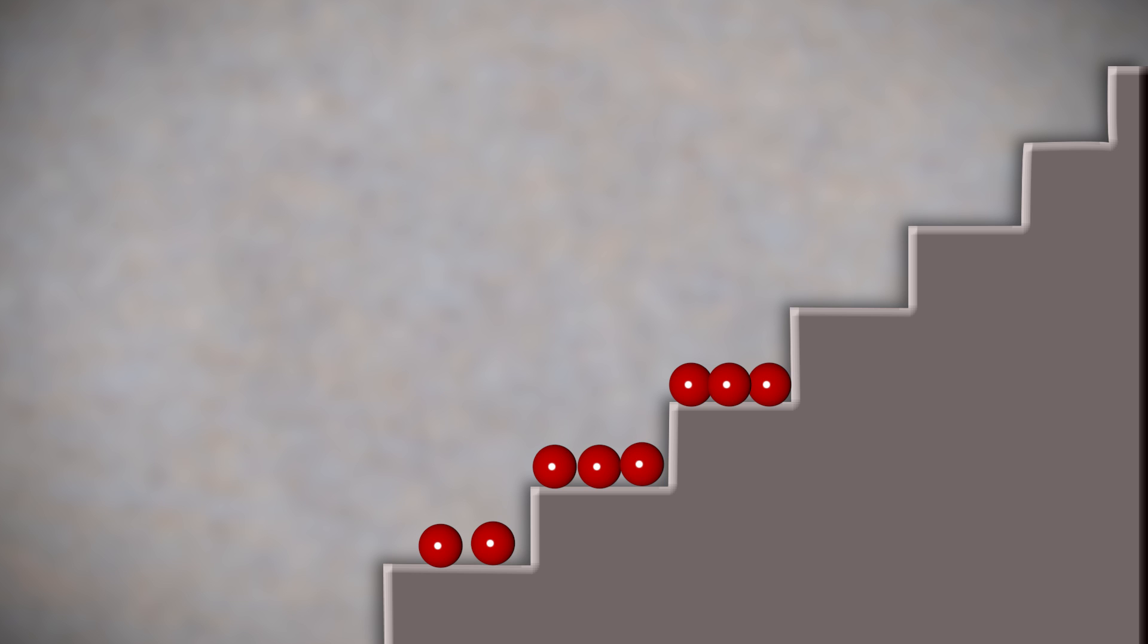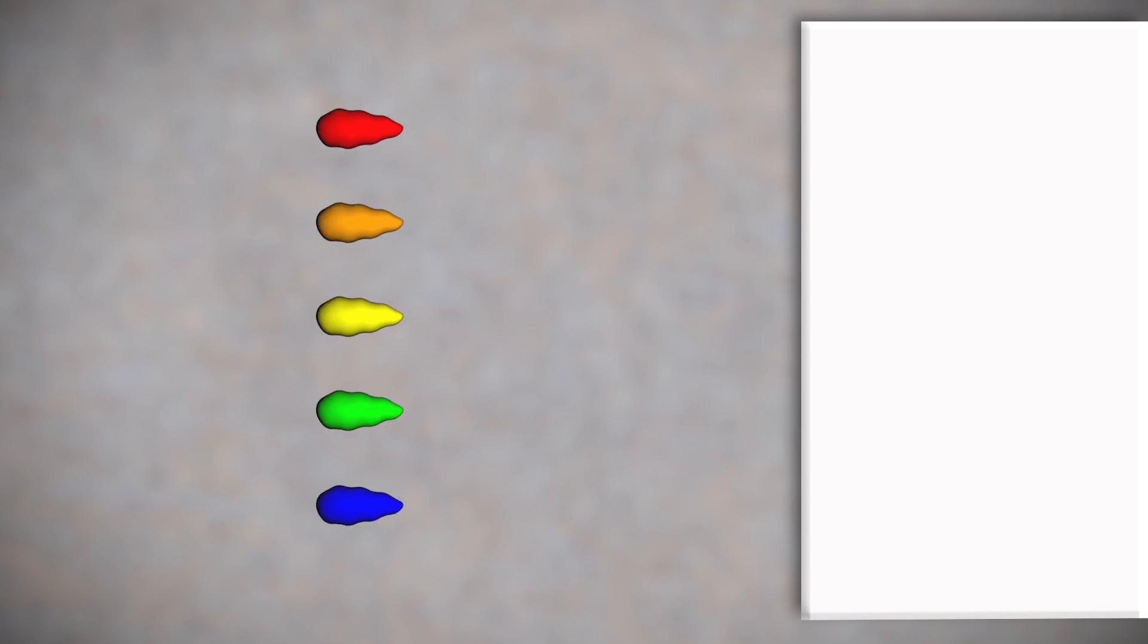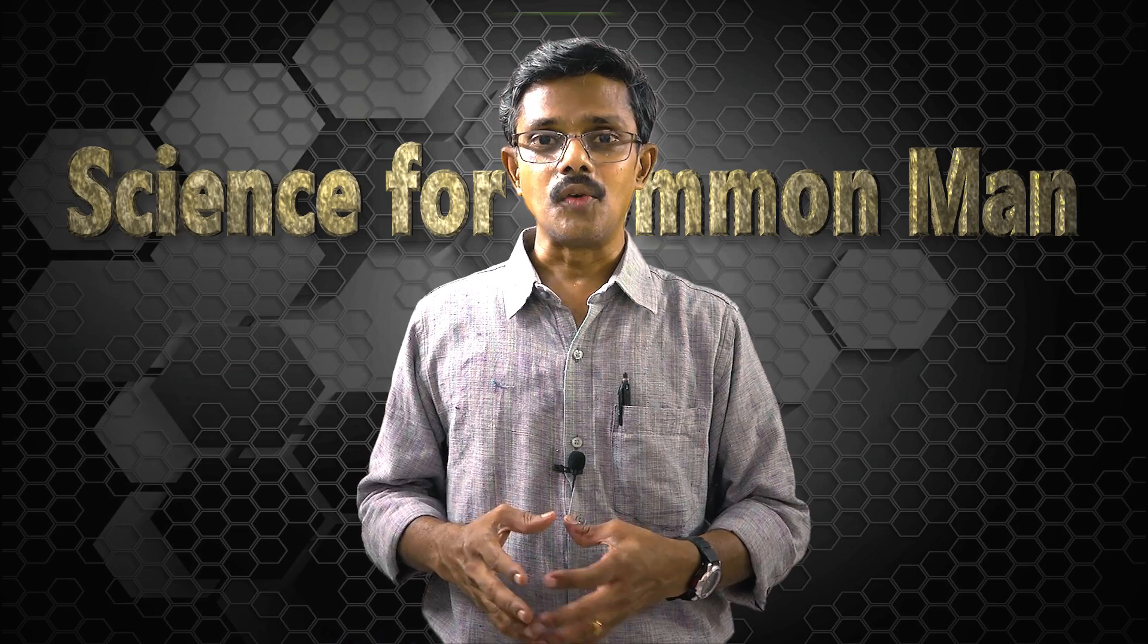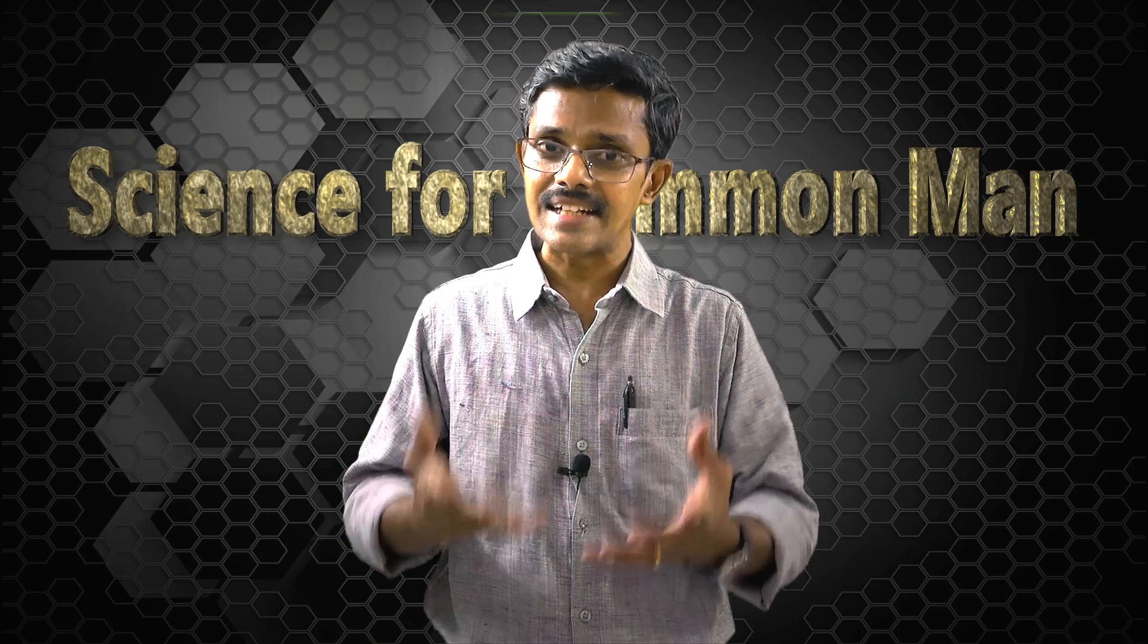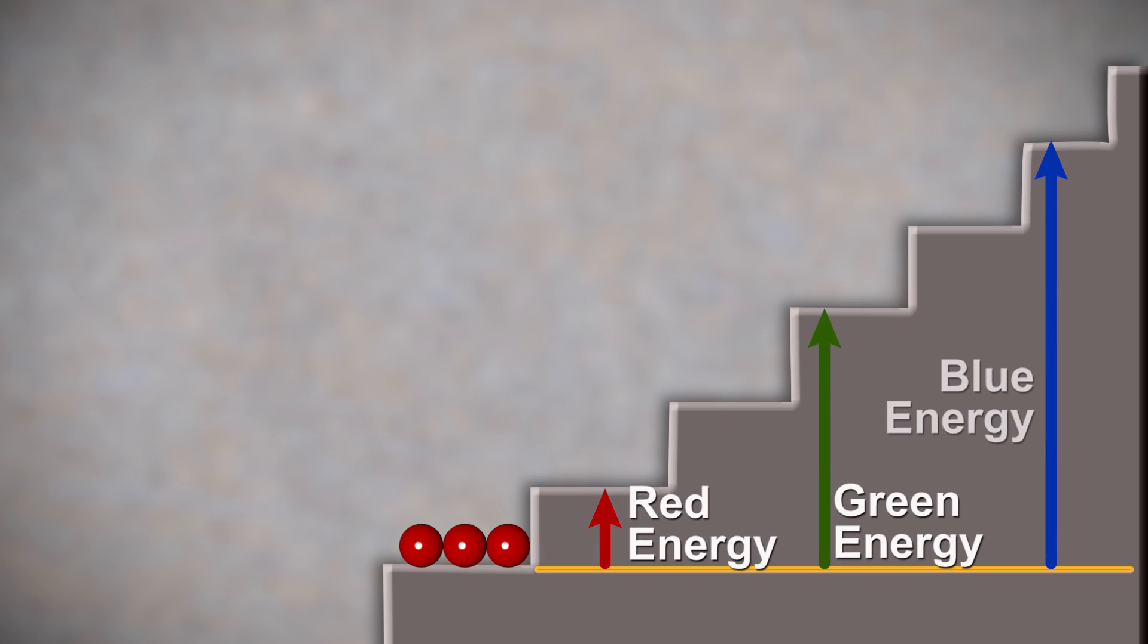Now, if a material has steps of all levels that correspond to energies of all colors, all photons will be swallowed and re-emitted. Since all photons are coming out, the material becomes white in color. Now, how can we make this material colored, say red? For that, first we need it to swallow all colors and then it should expel or emit only red. Or, we need to provide enough steps for upward jumping of electrons, but we should limit downward jumping just to one energy level, that of red.